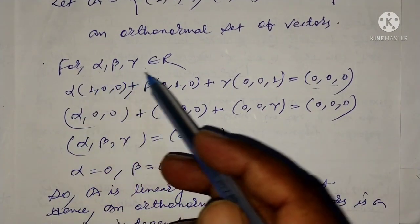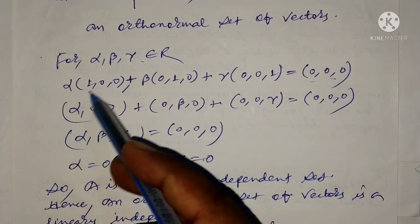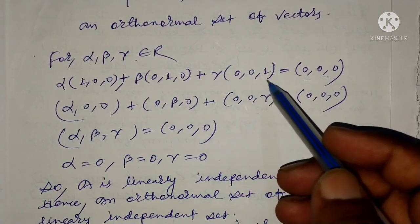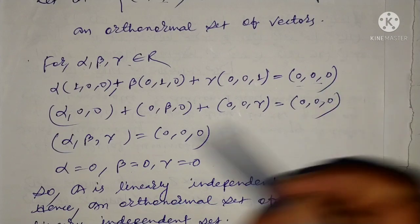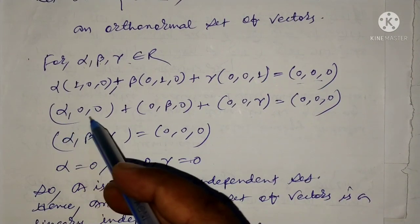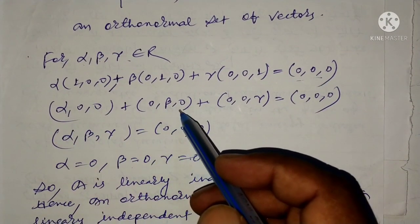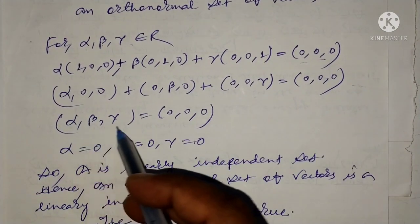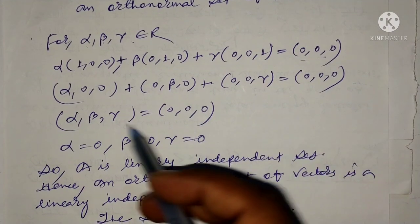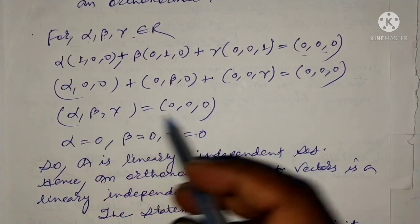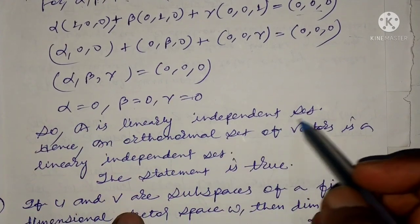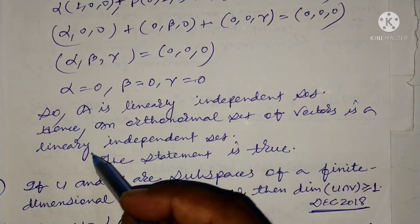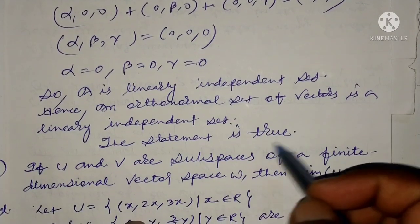This gives (α,0,0) + (0,β,0) + (0,0,γ) = (0,0,0). Comparing components, α = 0, β = 0, γ = 0. Hence an orthonormal set of vectors is a linearly independent set, and the statement is true.